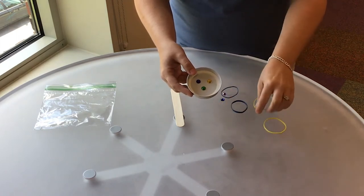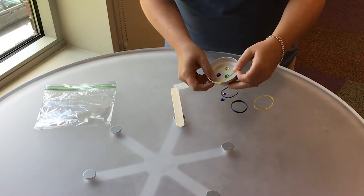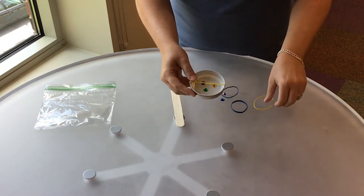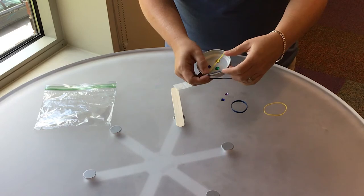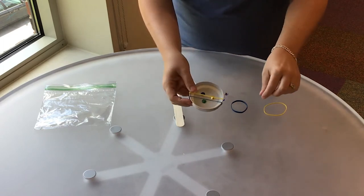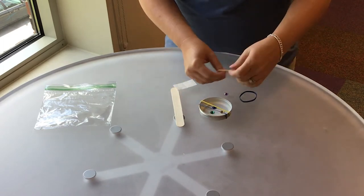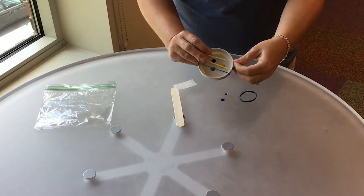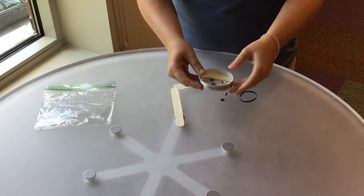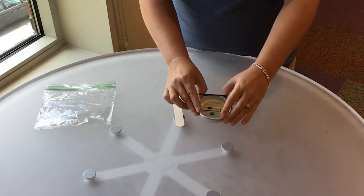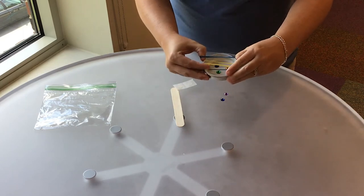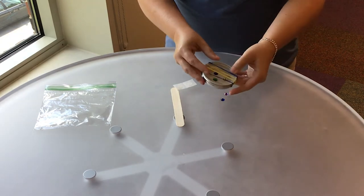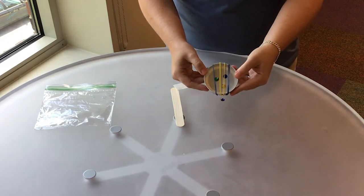Then you're going to take the rubber bands and slide them onto the lid just like that. And the fun thing about this is the rubber bands are all different colors so you can do whatever design you would like.